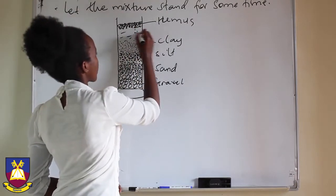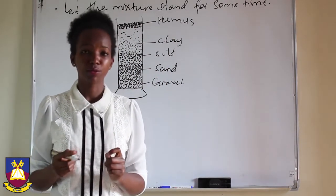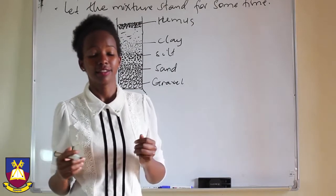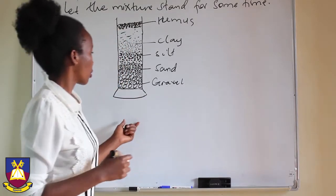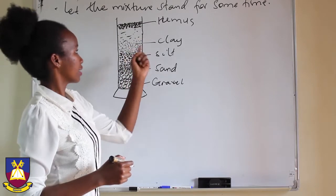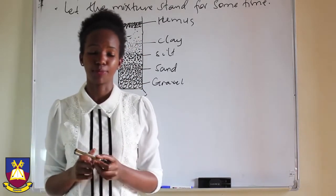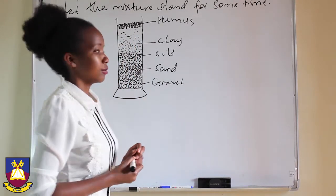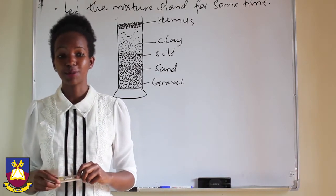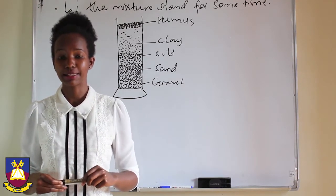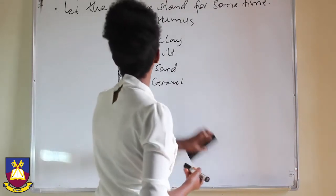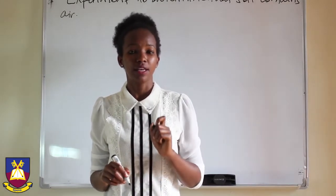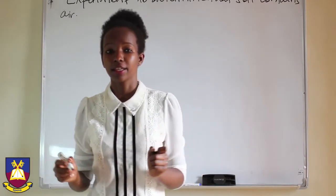So that's what happens when we get topsoil and mix it with water, stir it, and let it stand for a moment. It has gravel, it has sand, silt, clay, and humus which floats on top. Now we can look at another experiment: the experiment to determine that soil contains air. This same experiment can also help us determine the amount of air found in any type of soil.